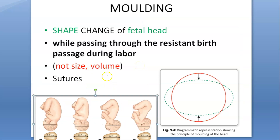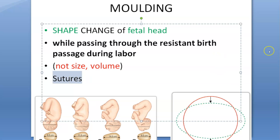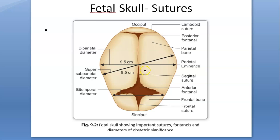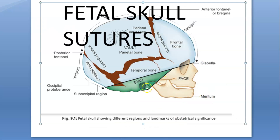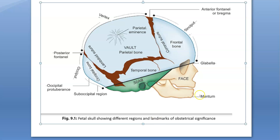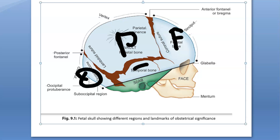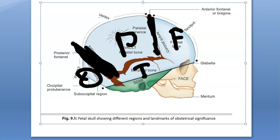Now, what is helping in all this are the sutures - the anterior fontanel, posterior fontanel, and the four sutures. This is the skull of the fetus as seen in previous videos. Look at these bones and how much gap there is between them - this all helps in molding. You have the frontal bone, parietal bone, occipital bone, and temporal bone. Here you have the anterior fontanel, the coronal suture, the posterior fontanel, and the lambdoid suture, and here you have the sagittal suture.